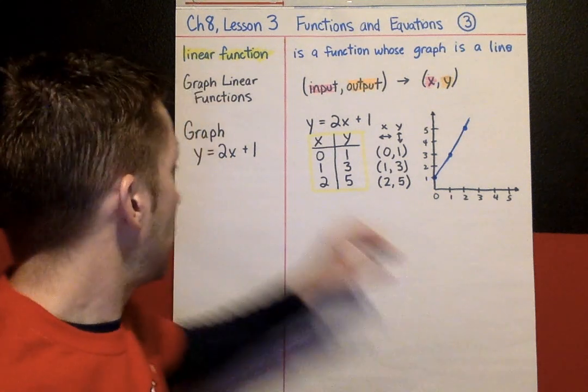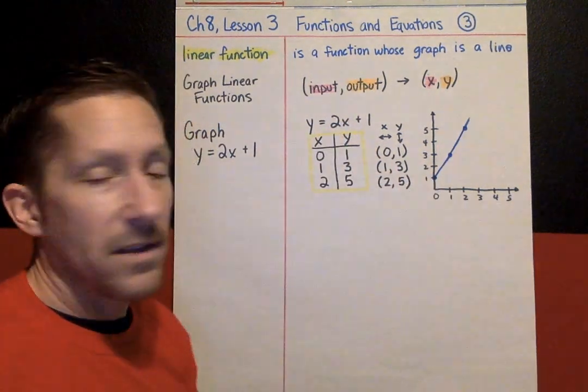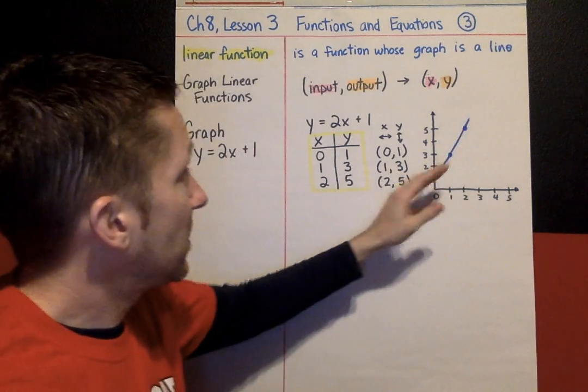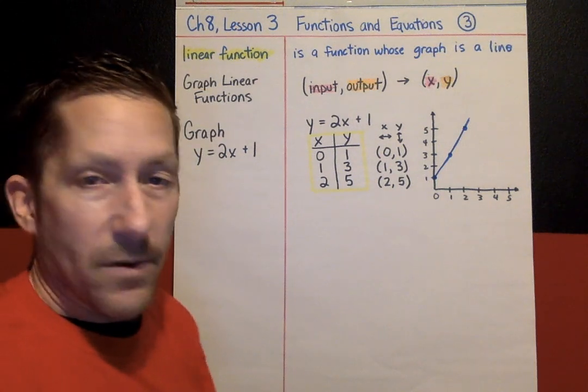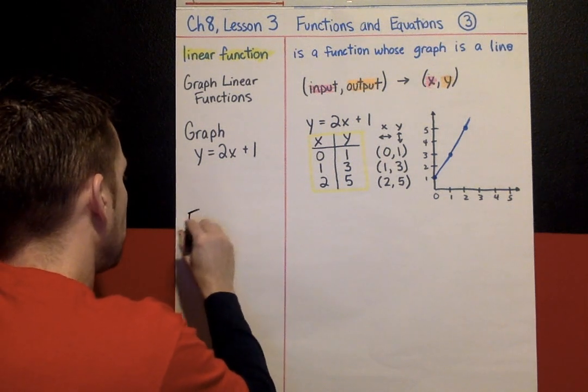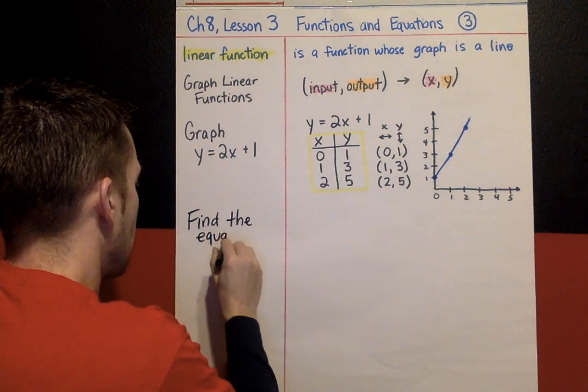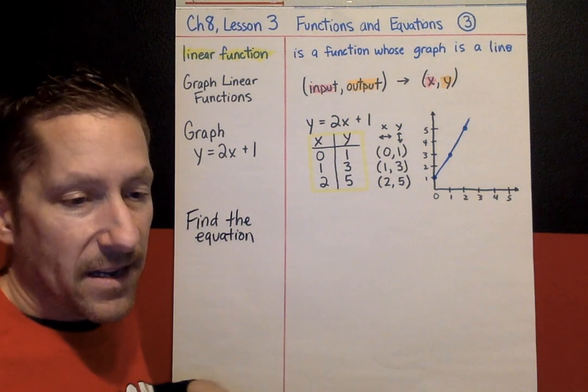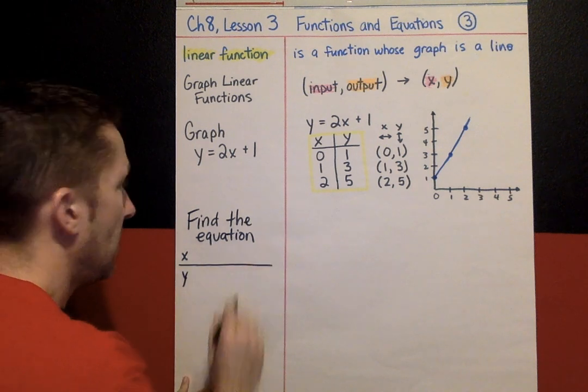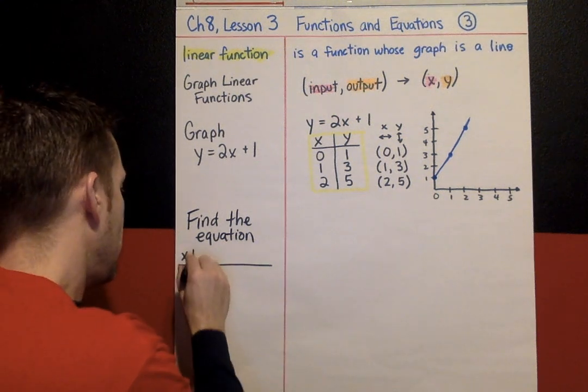Okay. Example number 2. So, this was given an equation, make a table, graph the equation. And, as you can see, this is a linear function. Our equation is a straight line. So, now we're going to do the back, we're going to work backwards now. Now, we're going to find the equation. Find the equation from this table. This time, instead of up and down, I'll make the table go sideways. And, here are our values.